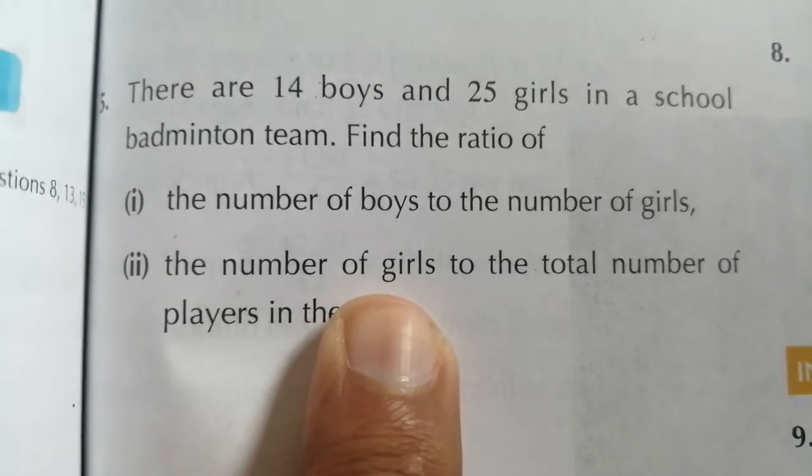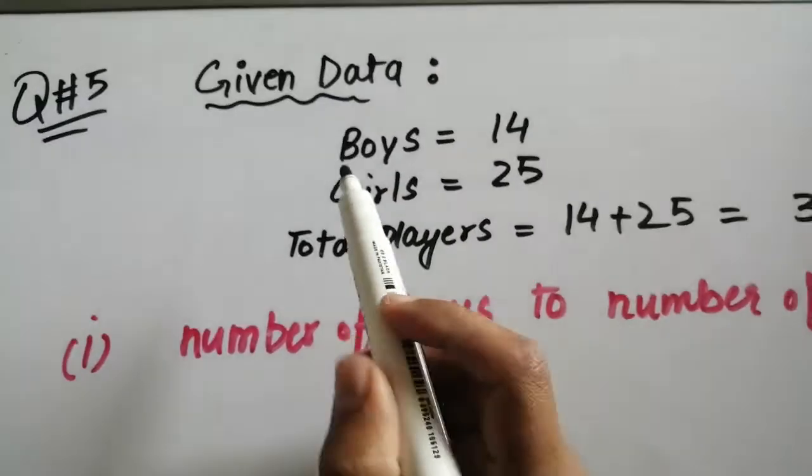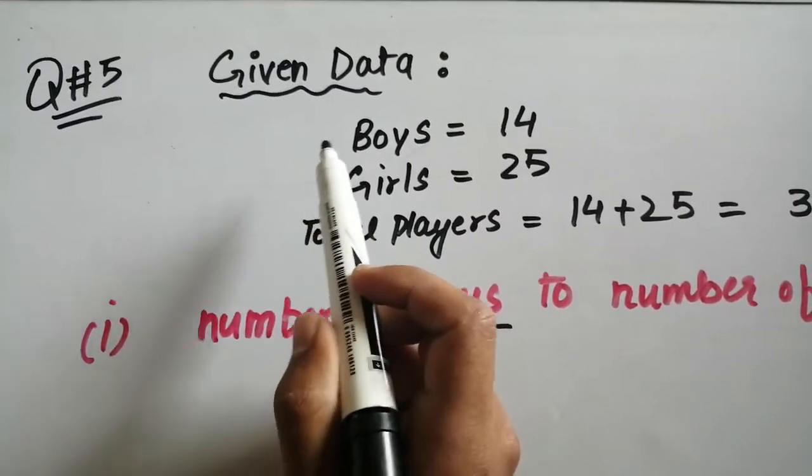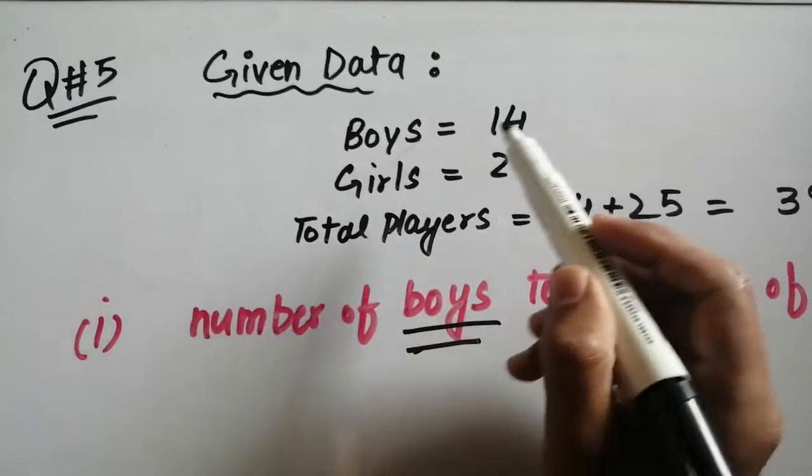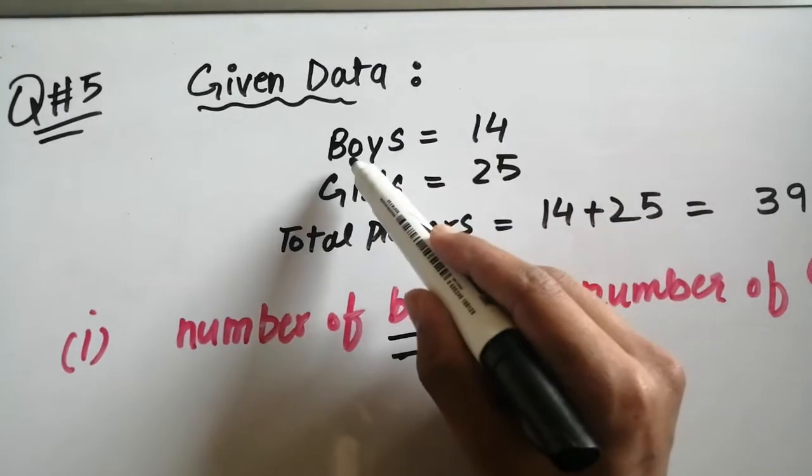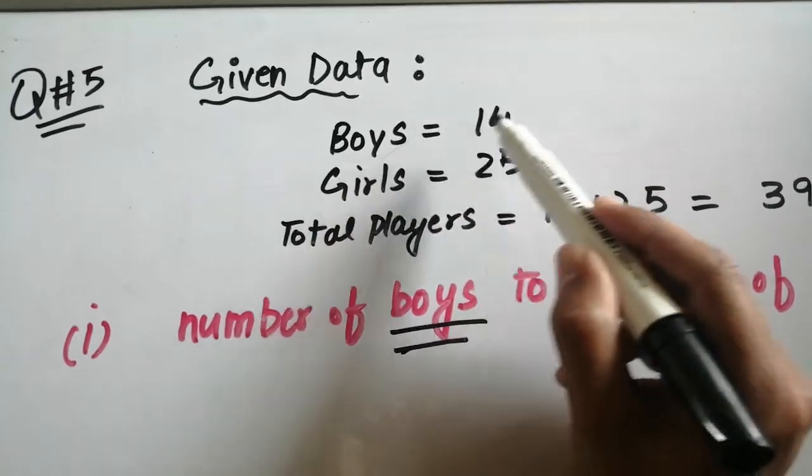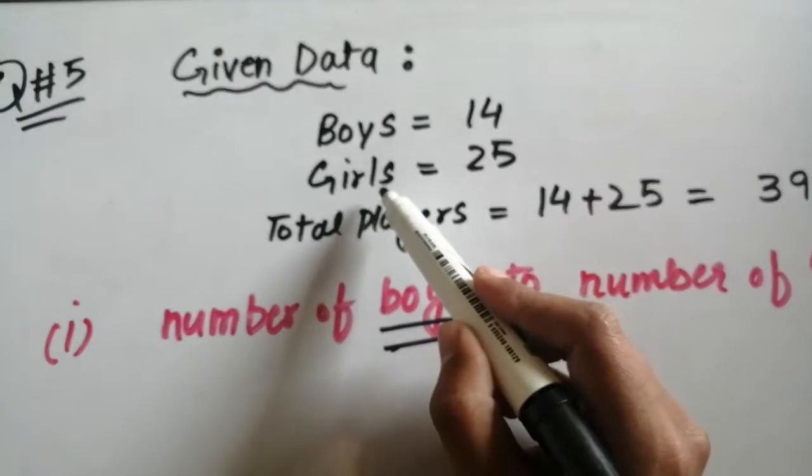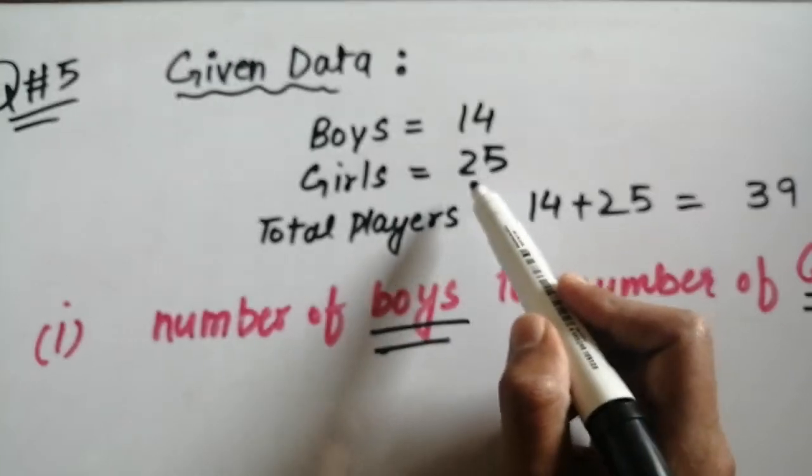So let's see how we can solve this problem. Question number 5, given data: We have boys total 14, and girls, which we have given in this question, are 25.